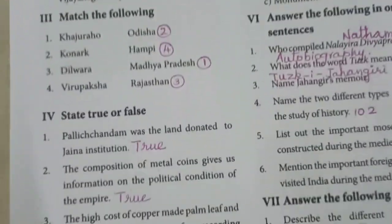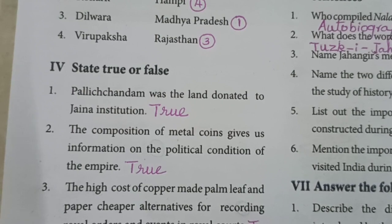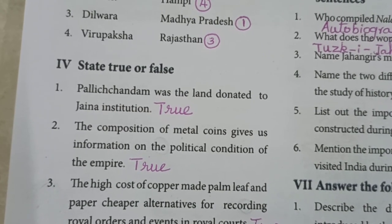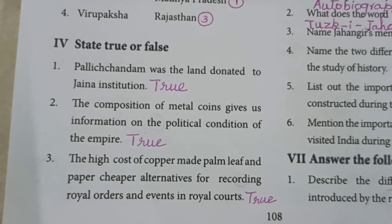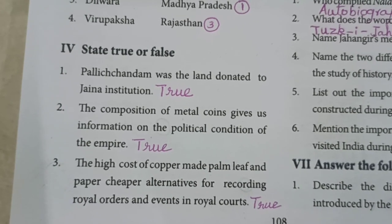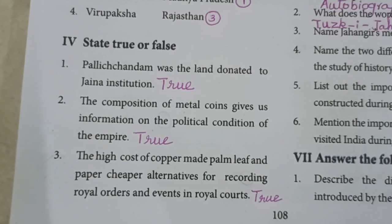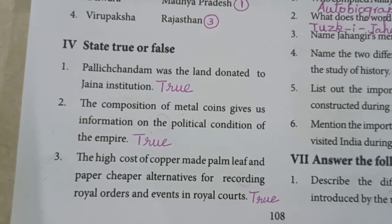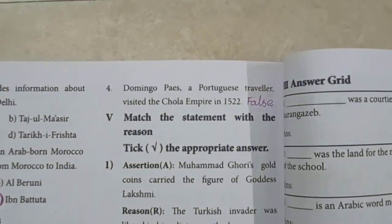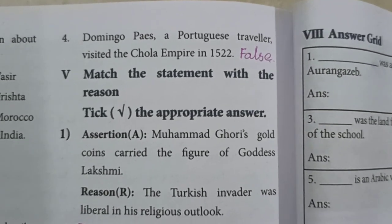Say true or false. First: Palli Chandam was the land donated to Jaina institutions — True. Second: The composition of metal coins gives us information on the political condition of the empire — True; it explains how prosperous the empire was. Third: The high cost of copper made palm leaf and paper cheaper alternatives for recording royal orders and events in royal court — True. Fourth: Domingo Paes, a Portuguese traveler, visited the Chola empire in 1522 — that statement is addressed here.